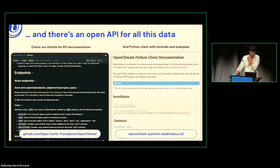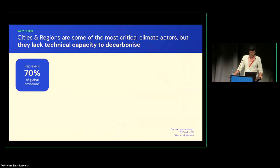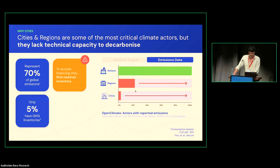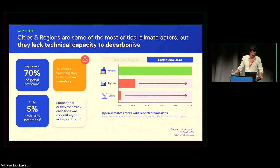We found that cities and regions, which we think are the most relevant actors in reducing emissions, are the ones that are the least supported. Cities and regions represent 70% of global emissions in a consumption-based view. To access financing to implement climate action initiatives, they need a GHG inventory first — that's a requirement from development banks and other organizations — but only 5% of cities have GHG inventories. That's really far from what we need.